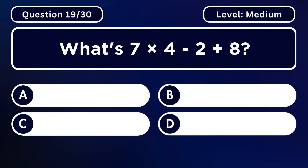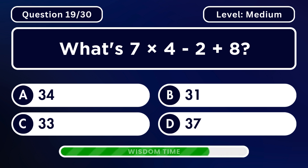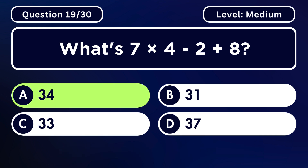What's 7 multiplied by 4 minus 2 plus 8? Answer A. 34.